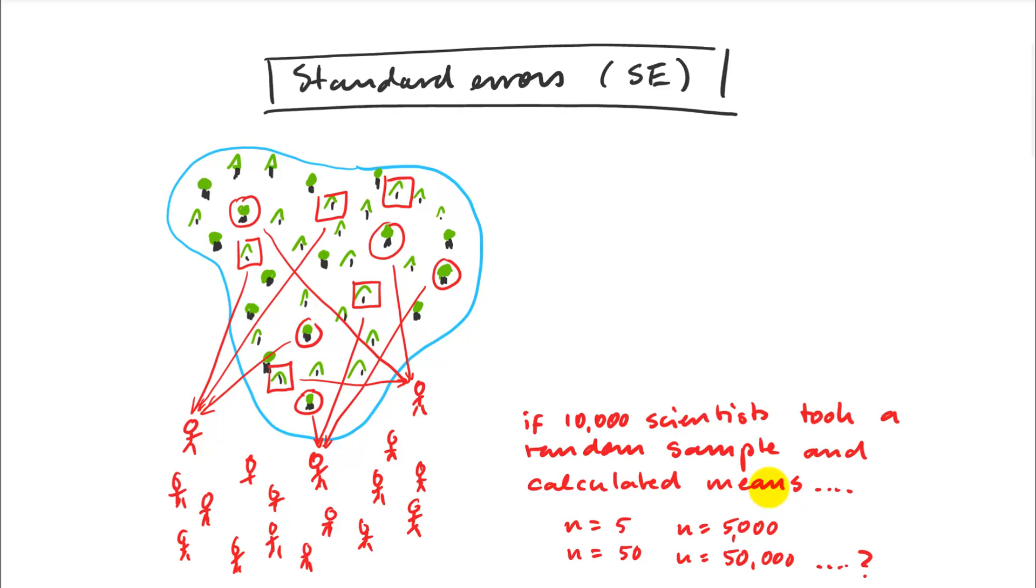And we would find that depending on how many samples they take, there are different degrees of certainty. So we could infer that from those distribution of means. So if a set of scientists were just going with five samples, those means could vary quite substantially.